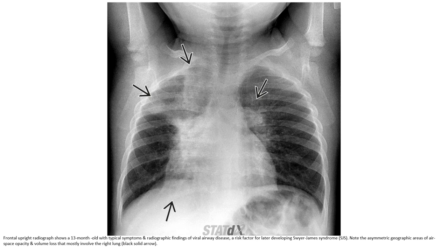From the radiograph, this is a 13-month-old with typical symptoms showing radiographic findings of viral lower airway disease, which is a risk factor for later developing Swyer-James Syndrome. Note the asymmetric geographic area of airspace opacity and volume loss that mostly involves the right lung.